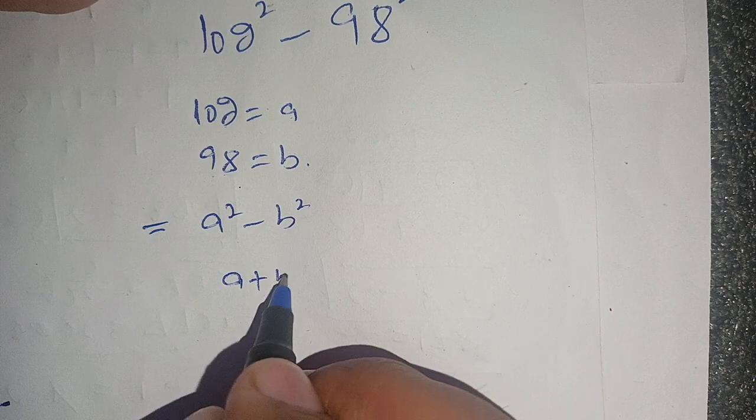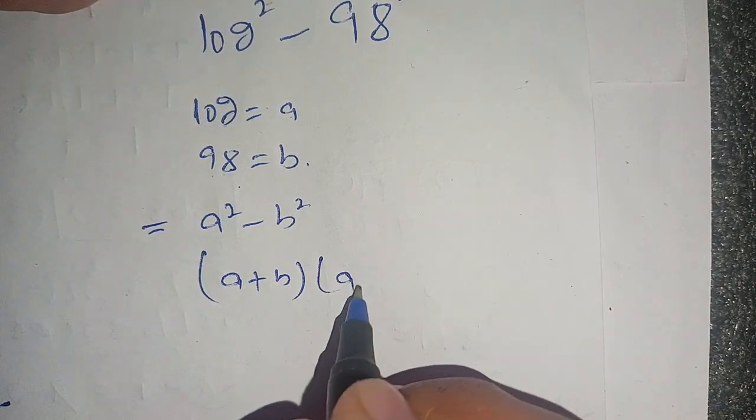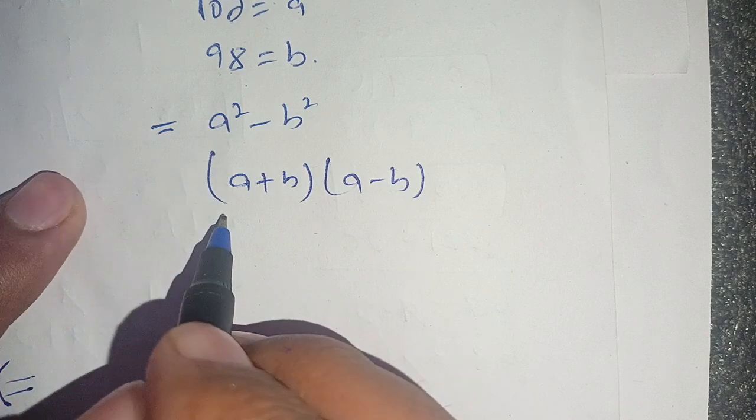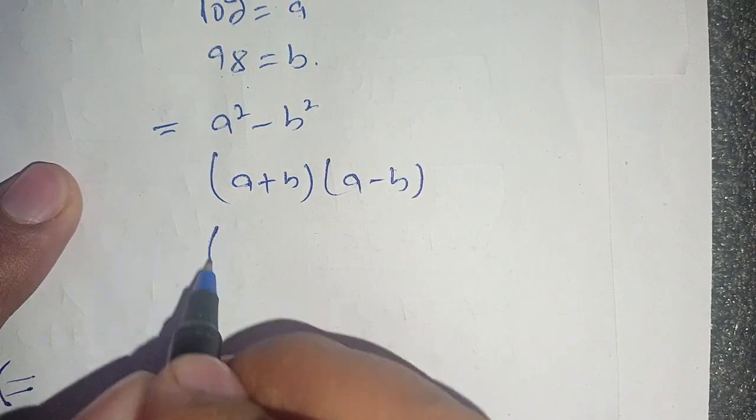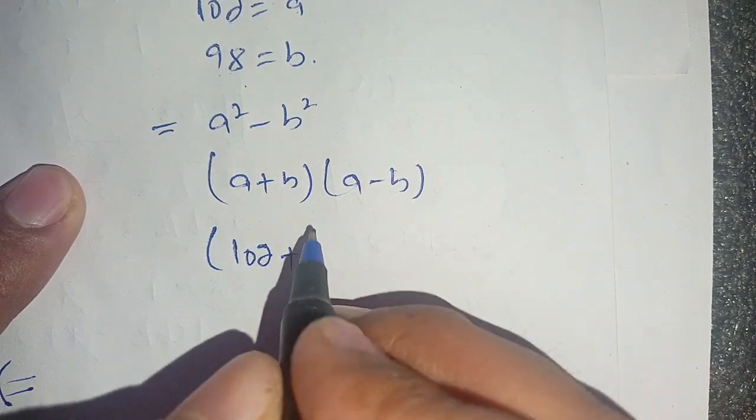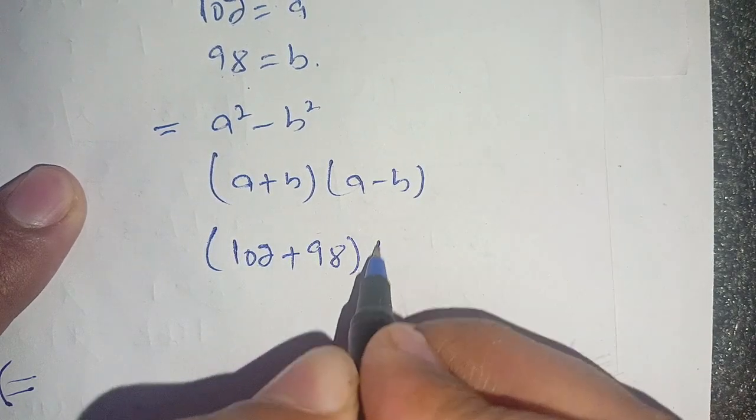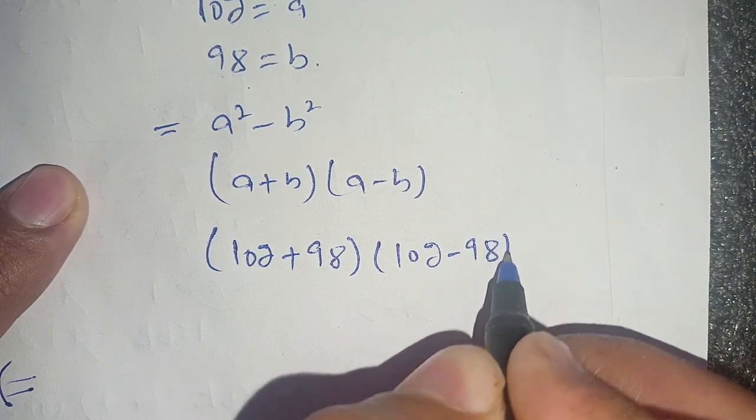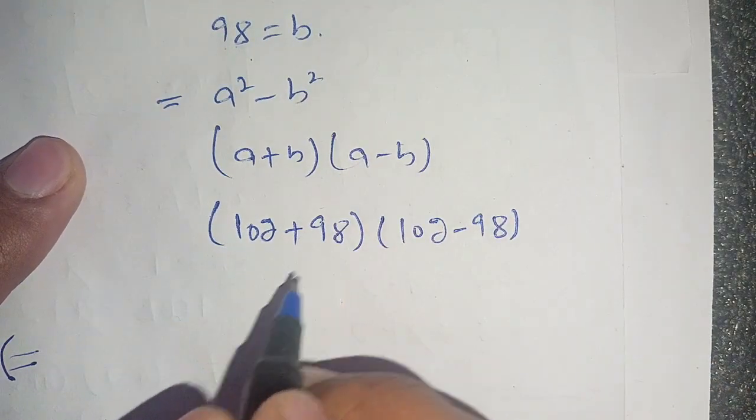Now we substitute the value of a and b. We get, in place of a we substitute 102, in place of b we substitute 98, times (102 minus 98). Now 102 plus 98 will become 200.